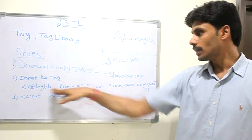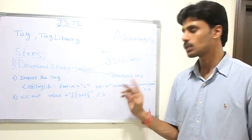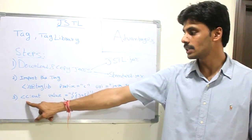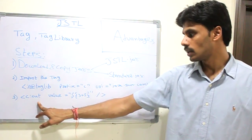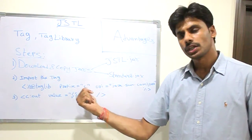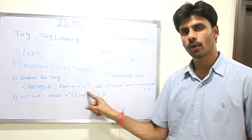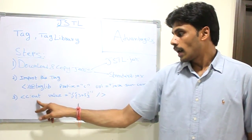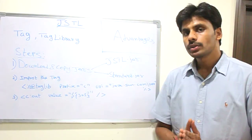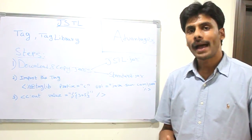Once you add the taglib directive to your page, you can now use all the tags within that library. Here is an example tag: c:out. 'c' is the prefix we defined. You can name it whatever you want, but since these are core tags, I am using 'c' for it. 'out' is the tag I want to use — it is a tag which can send output back to the browser.